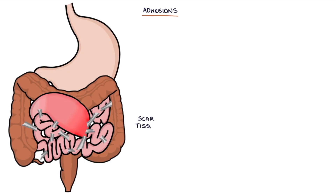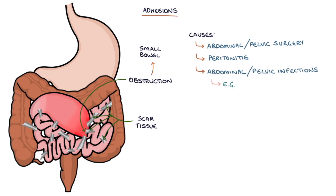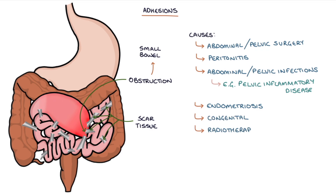Adhesions are pieces of scar tissue that bind the abdominal contents together. They can cause kinking or squeezing of the bowel leading to obstruction, and typically cause obstruction in the small bowel rather than the large bowel. The main causes of intestinal adhesions are abdominal or pelvic surgery — particularly open surgery as opposed to laparoscopic surgery — peritonitis, abdominal or pelvic infections such as pelvic inflammatory disease and endometriosis. Less commonly they can be congenital or secondary to radiotherapy treatment.